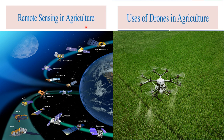Remote sensing in agriculture: Remote sensing is directly connected with satellite. By the help of this technique we can find out monsoon, ozone layer depletion, and smog, etc. Use of drone in agriculture: by the help of drone technology, mass data collection, land survey, seed planting, application of fertilizer, pesticide spraying, and water irrigation can be done.